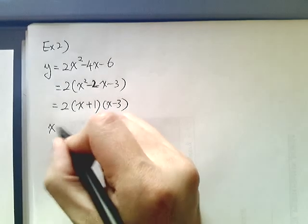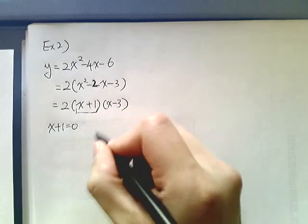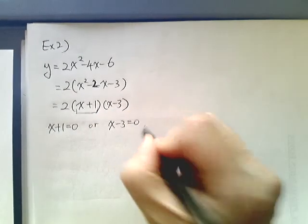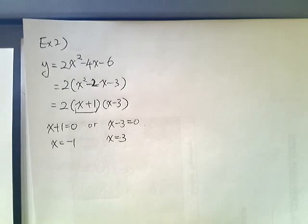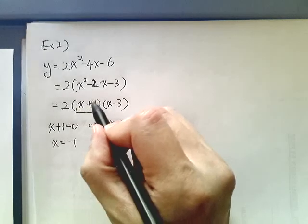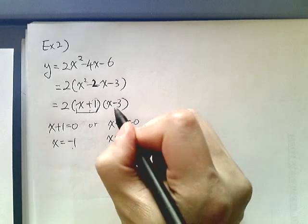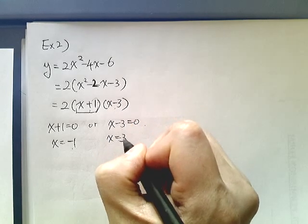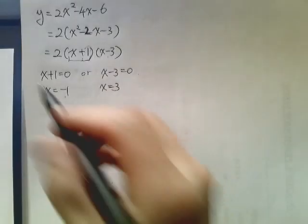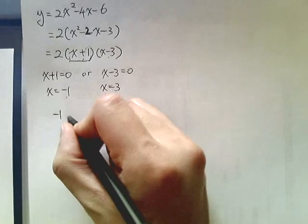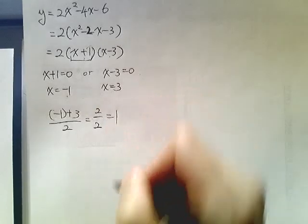Okay? So in this case, my x-intercept is whatever the value makes this one 0. So x plus 1 equals 0, or x minus 3 equals 0. So x equals negative 1, or x equals 3. Now, a shortcut is simply whatever the number you see inside, opposite sign of the same number, which is negative in this case, or opposite sign of this number, which is positive 3. Those are the x-intercepts. Okay? So once you have that, then we just simply add negative 1 and 3 and divide it by 2. So this will result in 2 over 2, which is 1.